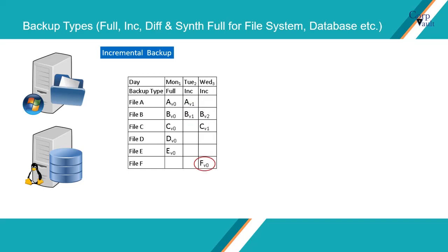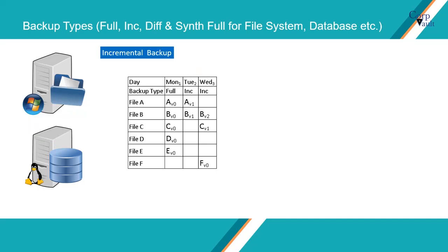What if a new file is created on a day when an incremental backup is scheduled? During the scan phase, files that are created, modified, or accessed since the last backup are checked. If a new file is found, then a full backup of that file is performed. This is what happens to file F in our example. Other files B and C are incrementals, hence changes made since the time of the last backup are written to backup media.